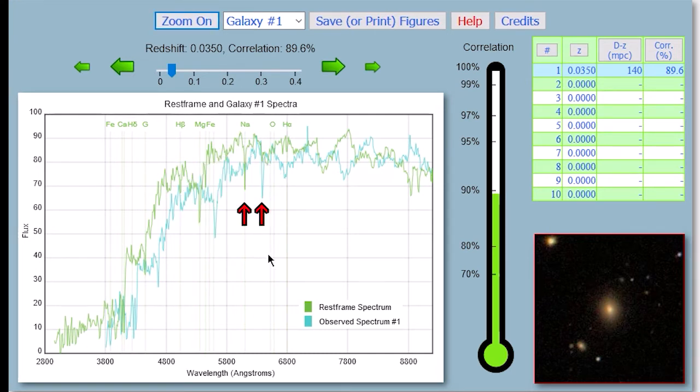So your job is to move the green spectrum until it looks like it's lined up on top of the blue spectrum as accurately as possible. Now when they're best matched up, that means that the correlation between them is high. And this thermometer deal over here tells you how much correlation you've got. So we want this correlation to get higher.